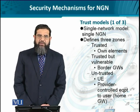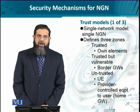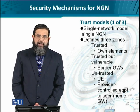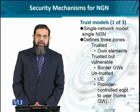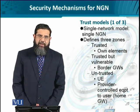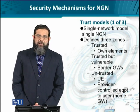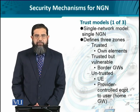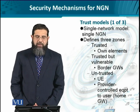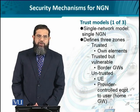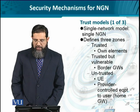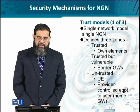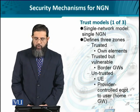The first zone is the trusted zone, which means the innermost and completely owned infrastructure of the NGN service provider — its own network elements. Then there are elements which may be trusted initially but may become vulnerable, such as border gateways interfacing with other networks. Then we have untrusted users, user equipment, and provider-controlled equipment. For instance, a home gateway, and in LTE and LTE-A, we have the eNodeB and a home eNodeB.